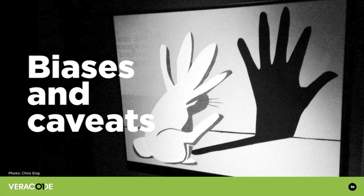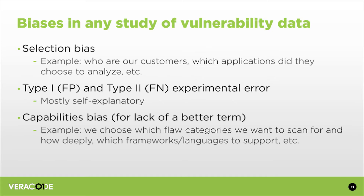Any study of vulnerability data from any security company has a selection bias, whether they tell you or not. Our data comes from our customers — about 1,000 of them — and we can only analyze the stuff they send us. Some customers have 2,000 or 3,000 applications but may only send us 500. So there's a selection bias in what they choose to send us, as well as who they are. You could say this shows the best possible scenario of software security, because we're talking about companies that actually care enough to invest in the process.